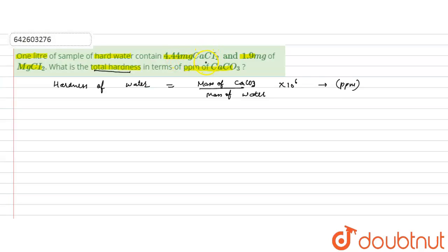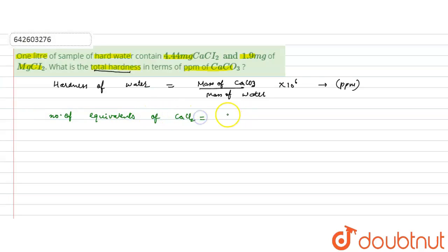When calcium chloride reacts with a carbonate source, it forms calcium carbonate. The number of equivalents of calcium chloride will be equal to the number of equivalents of calcium carbonate.